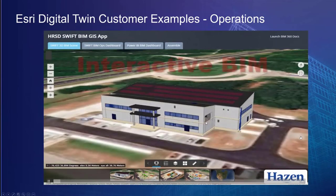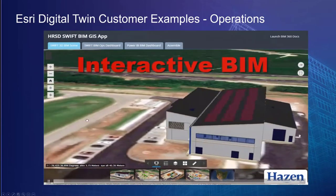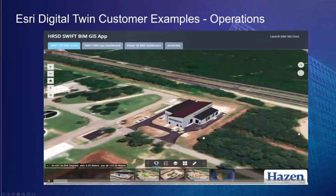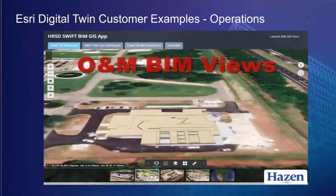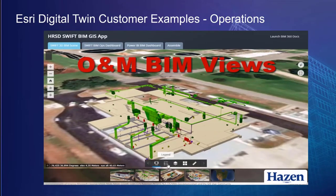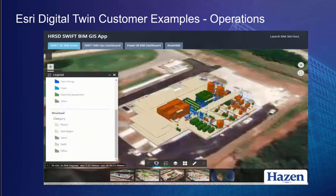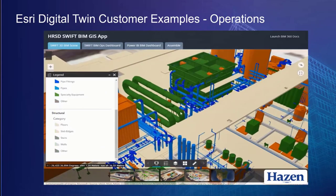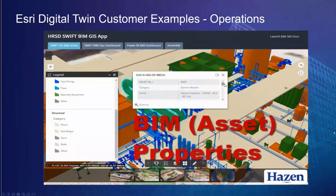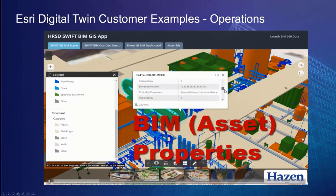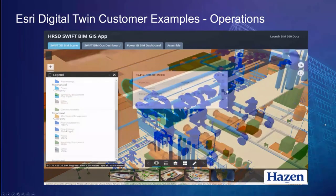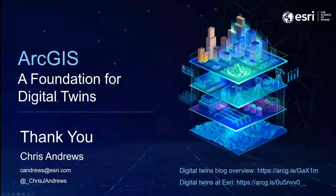Hazen and Sawyer are building a type of digital twin for the water industry much closer to what was described earlier — a GIS 3D dashboard into the live state of water facilities, bringing together a whole range of data types. Some of the data stays resident in its system of record rather than being pulled into GIS; it's really just a view on the entire system, and there are other views on that system as well that are not Esri.